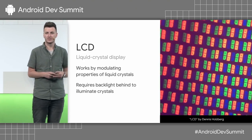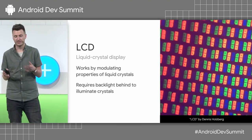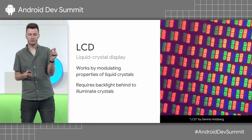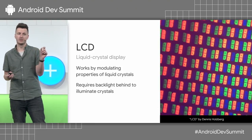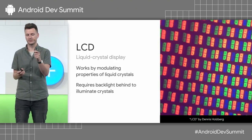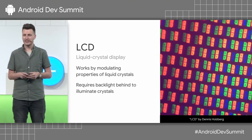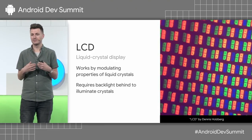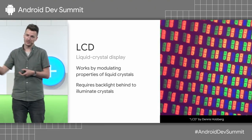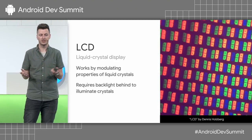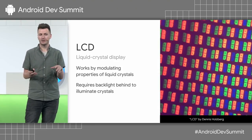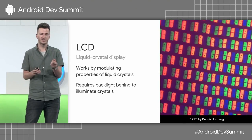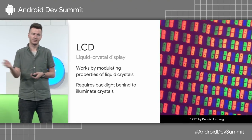LCD stands for Liquid Crystal Display, and they work very differently to an OLED. Each pixel is made up of a number of color channels of liquid crystals. The important thing to know is that they require a backlight — those liquid crystals don't illuminate themselves. It requires a backlight behind them to shine through the crystals, and that's how you see color. Most of the power for an LCD display goes into that backlight. The actual crystals don't require that much — it's the backlight.